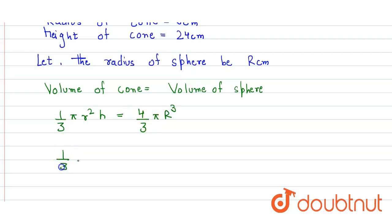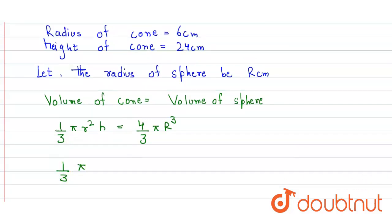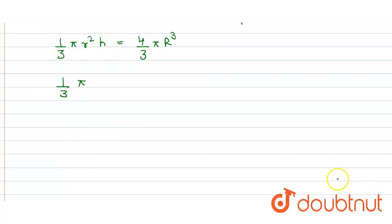So we get (1/3)π(6)²(24) = (4/3)πr³, where we need to find r.